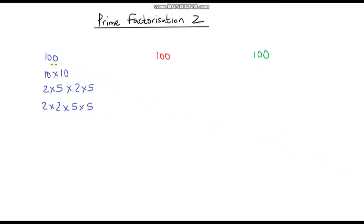Now we didn't have to start with 10 times 10. We could start with 2 times 50, so I know that 2 times 50 is also 100. 2 is already prime, but 50 we can break that down further, so I can break that down into 5 times 10.